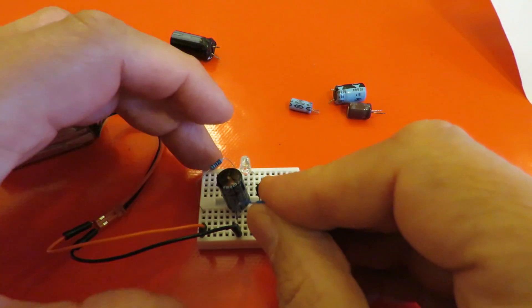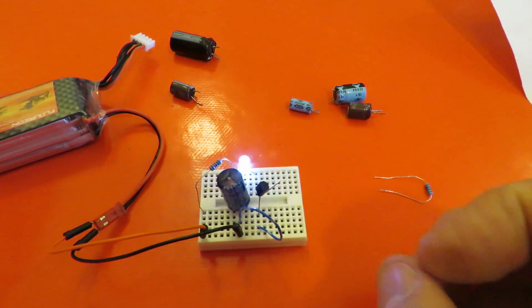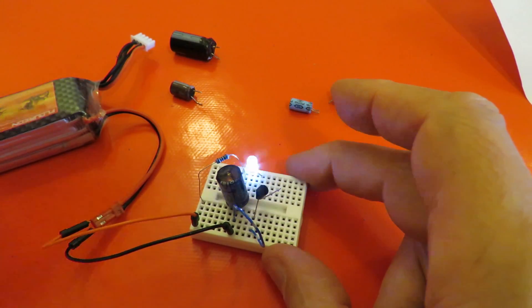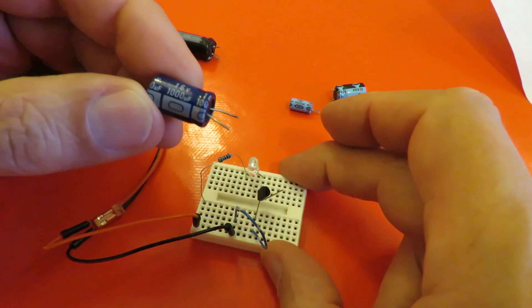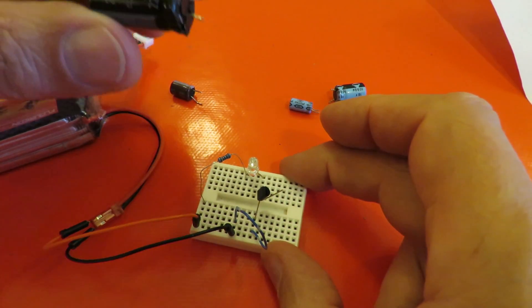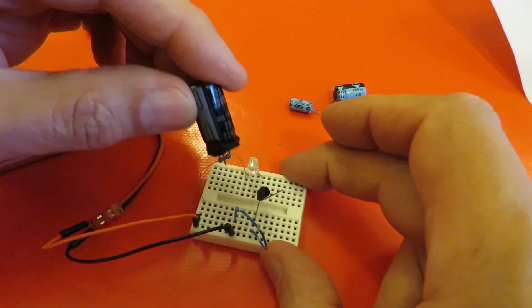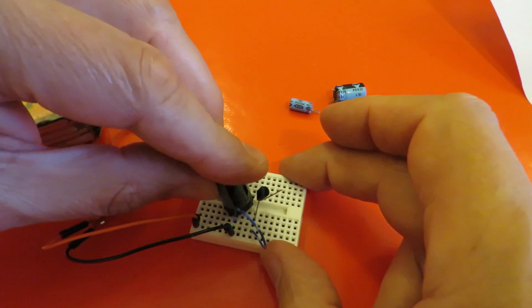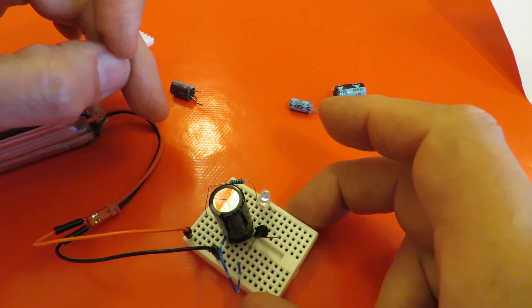But if I come straight across here we're flashing fine. That's with 1000 microfarads. This one's 2200. So we get a slower flash.